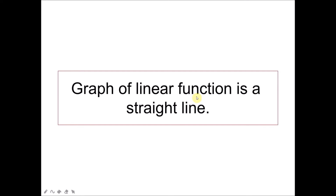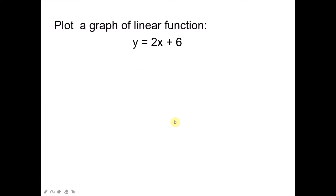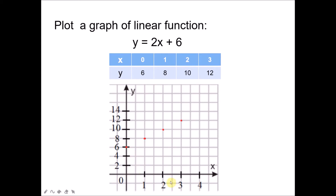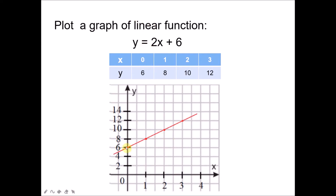A graph of a linear function is a straight line, and can be represented by the graph of a straight line. So now we have to plot a graph of a linear function. This is a linear equation — you can see X power 1, Y power 1. To plot this, first we construct a table with values of X and Y. When X is 0, 2 times 0 is 0, plus 6, Y equals to 6. When X is 1, 2 times 1 is 2, plus 6 is 8. Then I plot the graph — (0,6), (1,8), (2,10), (3,12) — and draw the graph. A linear equation will form a straight line.